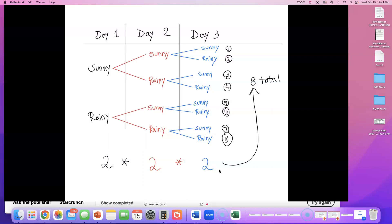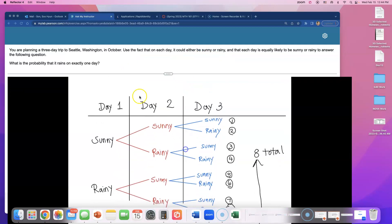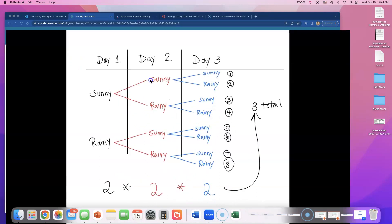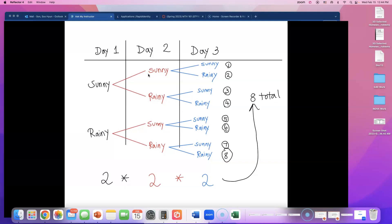Now what they are asking for is how many options of these is exactly one rainy day. I can highlight that. This option: sunny, sunny, and rainy. That orange option is just one rainy day. That's one. Let's see if there's any other just one rainy day option. How about this? Sunny, rainy, sunny. If I go with this green, I have two sunny days and one rainy day, and that's what they were asking for. I think I'm done with this branch.